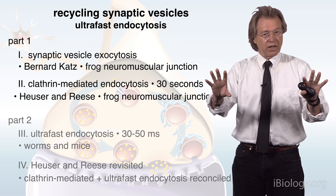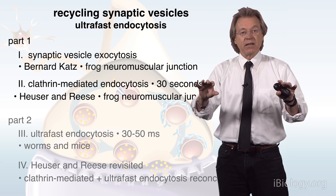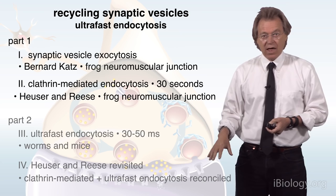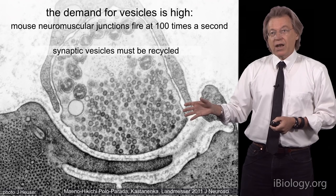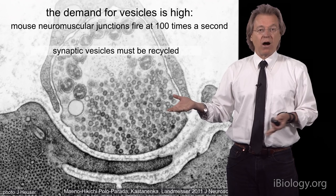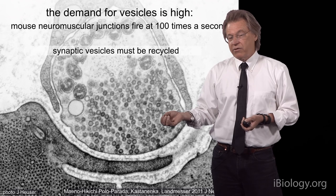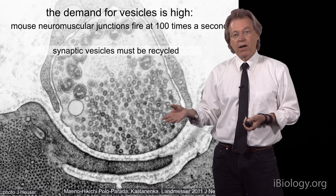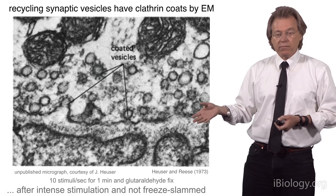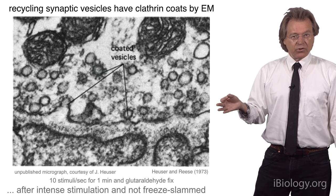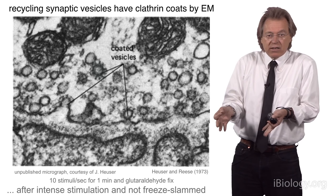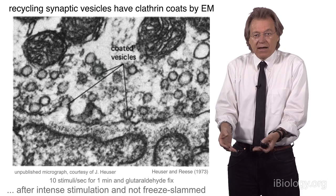What I'd like to talk about now is what happens to that membrane after it's fused. Synapses have to be very robust — the neuromuscular junction can fire 100 times a second. Every time you do that, you're releasing vesicles, and there's a limited pool of maybe 300 synaptic vesicles at a synapse. At these rates, you deplete the synapse of synaptic vesicles, and again, because it's far from the cell body, the synapse needs to recycle them. Heuser and Reese realized this and looked for evidence of it by stimulating very intensely, then fixing the sample and embedding it in plastic to look for any evidence of recycling.